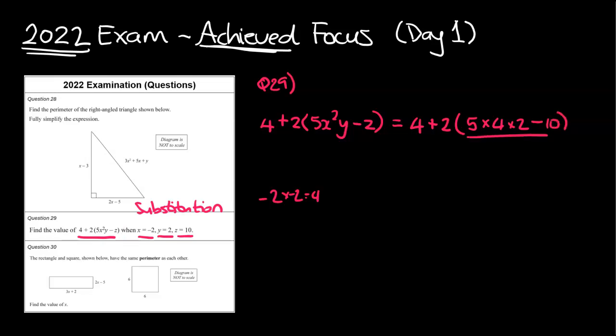As I said, we do the bracket first, then we do the times 2, then we do the plus 4, following our BEDMAS there. So all this bracket, 5 times 4 is 20, 20 times 2 is 40, minus 10 is 30. So that's going to be 4 plus 2 times 30. 2 times 30 is 60, and then finally, we're going to get to 64 when we add those together.